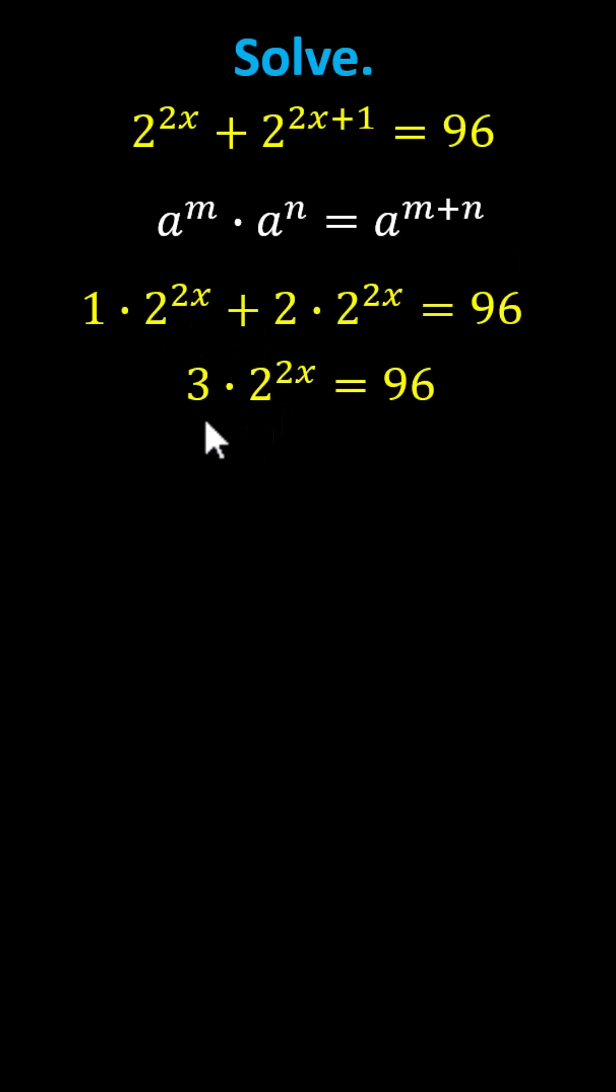And now we'll isolate 2 to the power of 2x by dividing both sides by 3, simplifying on the left 3 divided by 3 is 1, giving us 2 to the power of 2x equals on the right 96 divided by 3 equals 32.